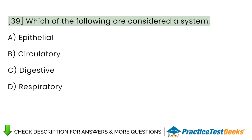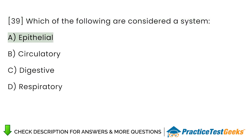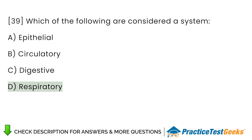Which of the following are considered a system? A. Epithelial. B. Circulatory. C. Digestive. D. Respiratory.